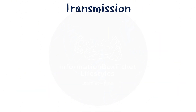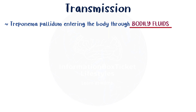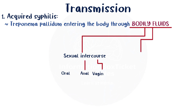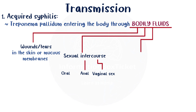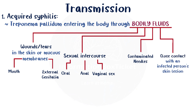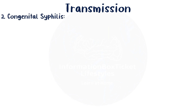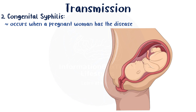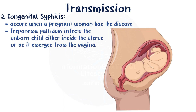There are two methods in which an individual with syphilis might spread the illness to other people. The first method involves Treponema pallidum entering the body through bodily fluids and is referred to as acquired syphilis. Sexual intercourse, including oral, anal, and vaginal sex, as well as microscopic wounds or tears in the skin or mucous membranes of the mouth or external genitalia, can cause that. It can also occur when people use contaminated needles or come into close contact with an infected person's skin lesion, because the lesion is coated in spirochete-rich fluid. The second type is congenital syphilis, which occurs when a pregnant woman has the disease and Treponema pallidum infects the unborn child either inside the uterus or as it emerges from the vagina.